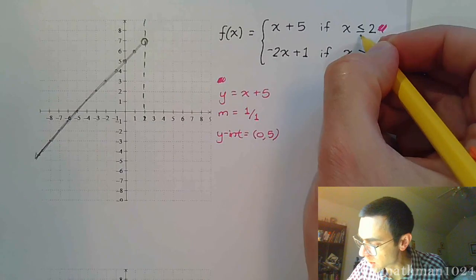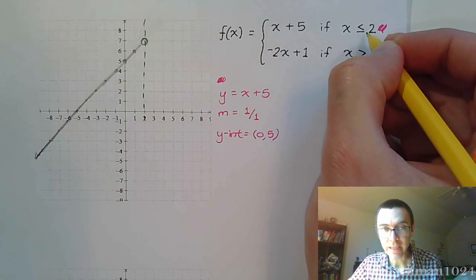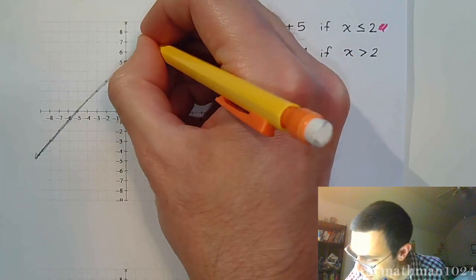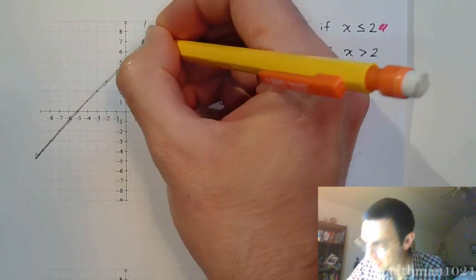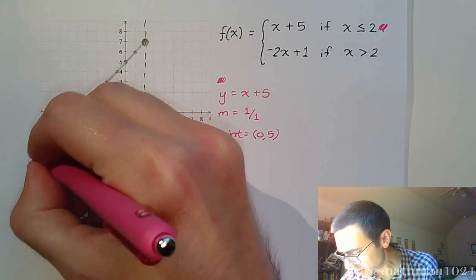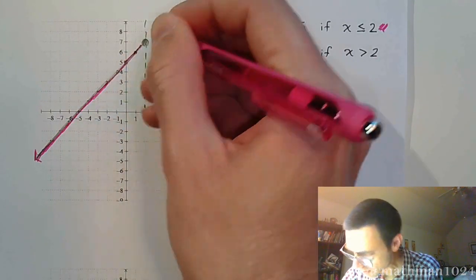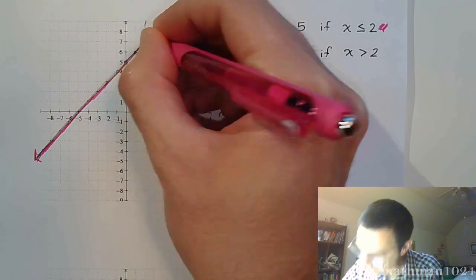When it stops, we look at this inequality to determine what we need to do. This says x could be equal to 2, which means this point gets filled in. Let's go over this in pink because this is the pink part of the function that we're doing, even including that guy.